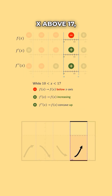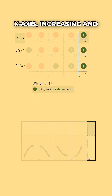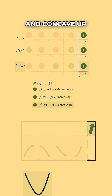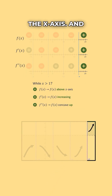Finally, when x is above 17, our function will be above the x-axis, increasing and concave up. Increasing and concave up give us this shape, and it will be above the x-axis.